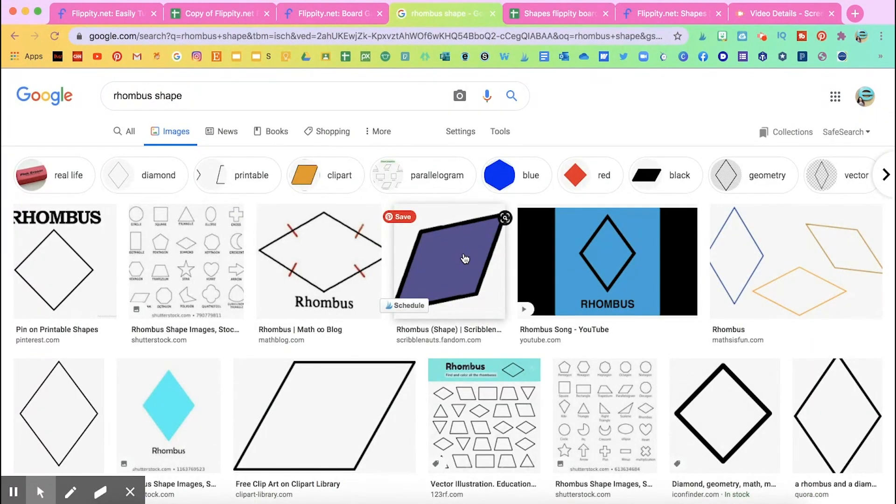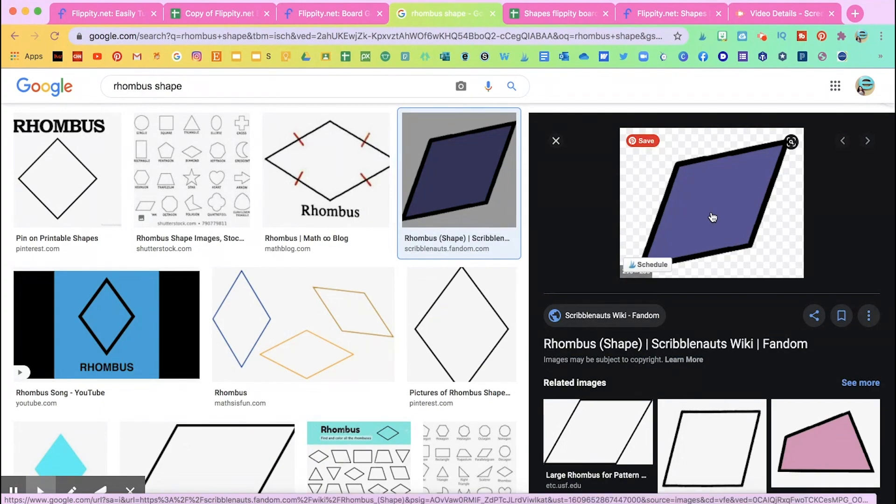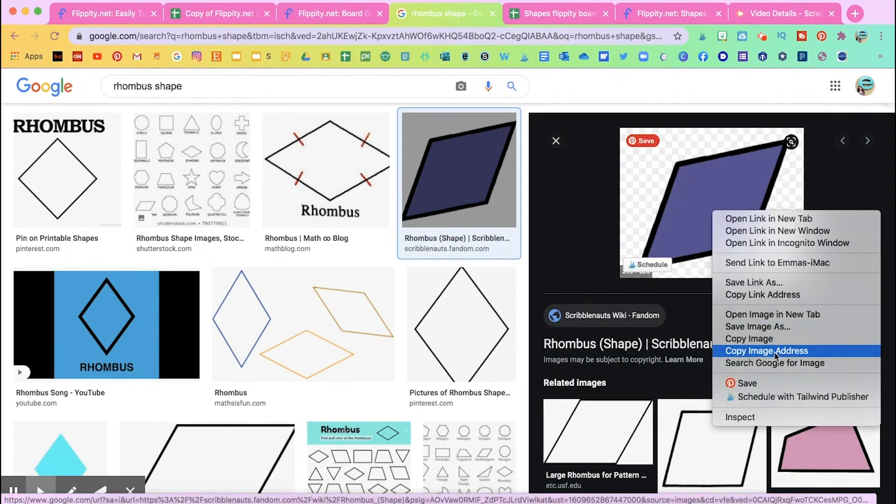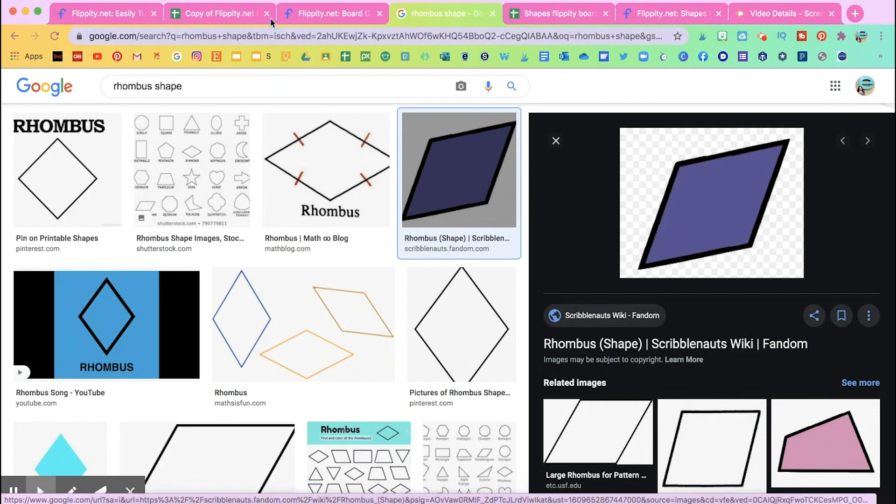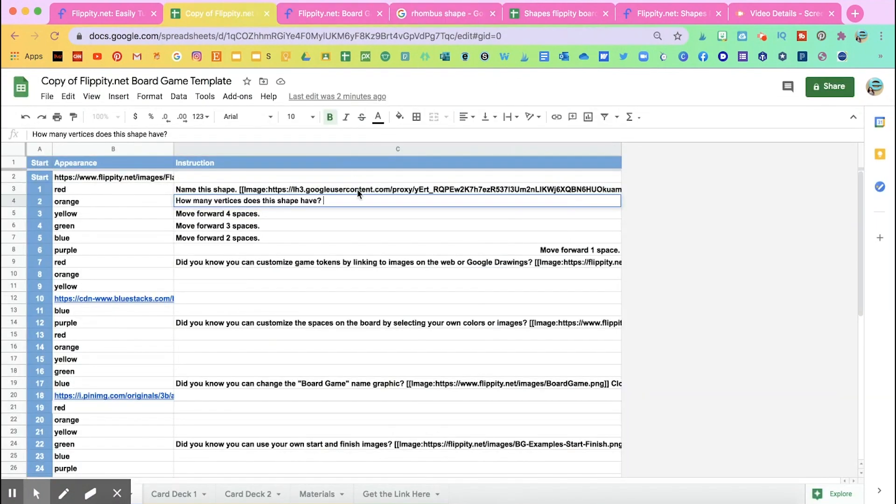So here I googled rhombus. I went to images. I'm going to click on this purple one. And then I'm going to right click. Copy image address. And then go back here.